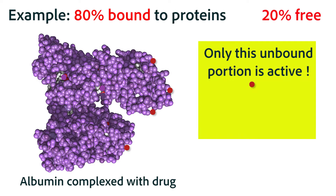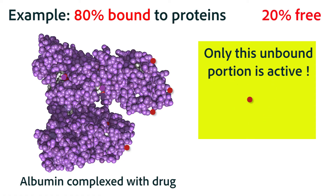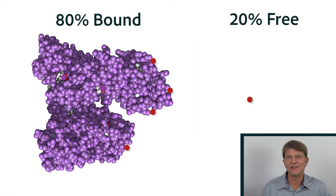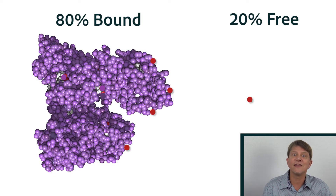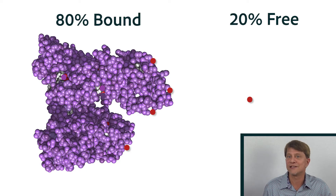Importantly, it's only the unbound portion of the drug that can be metabolized, and it's only the unbound portion of the drug that can exert its effect. And as you hear that, you may be thinking: well, if 80% is bound to the proteins then the 80% is going to be ineffective, right? Because the unbound portion of the drug is the only portion that can be metabolized or exert its effect.